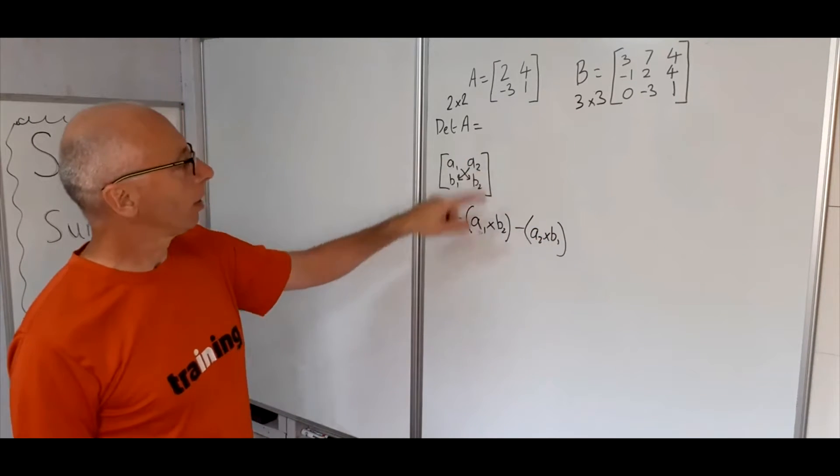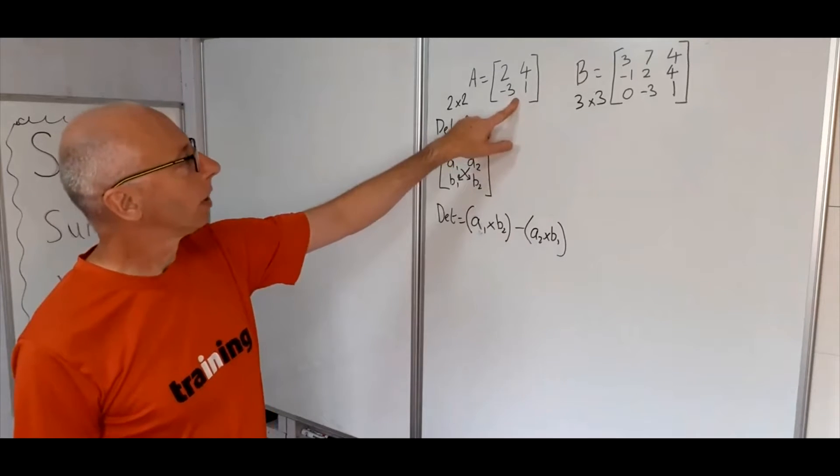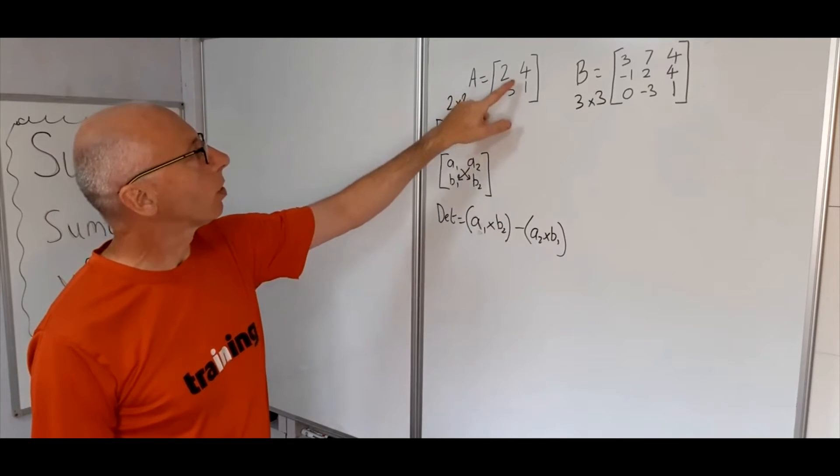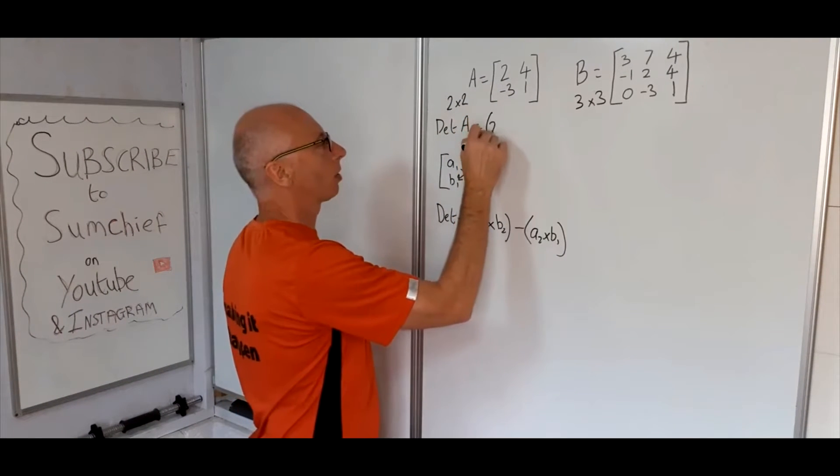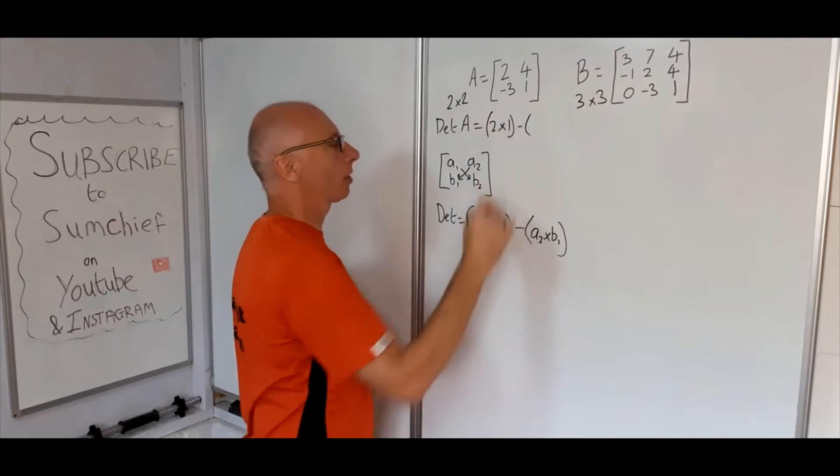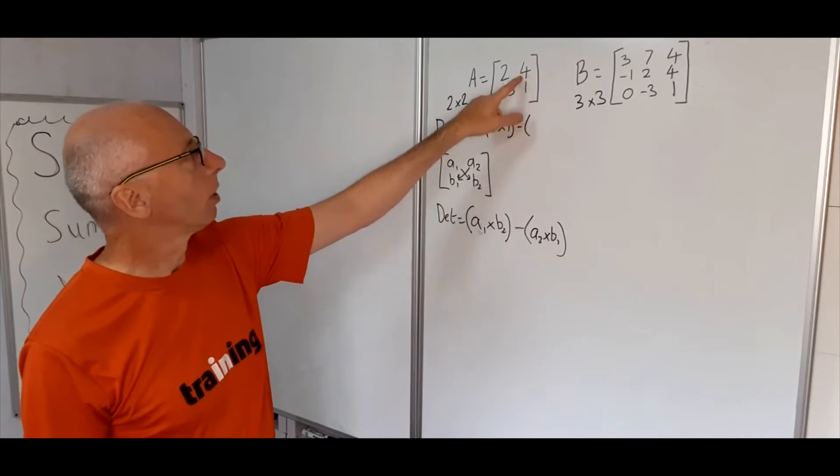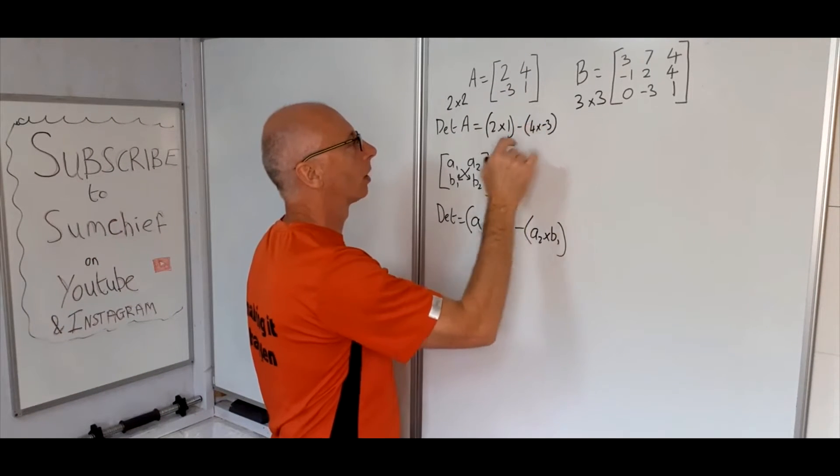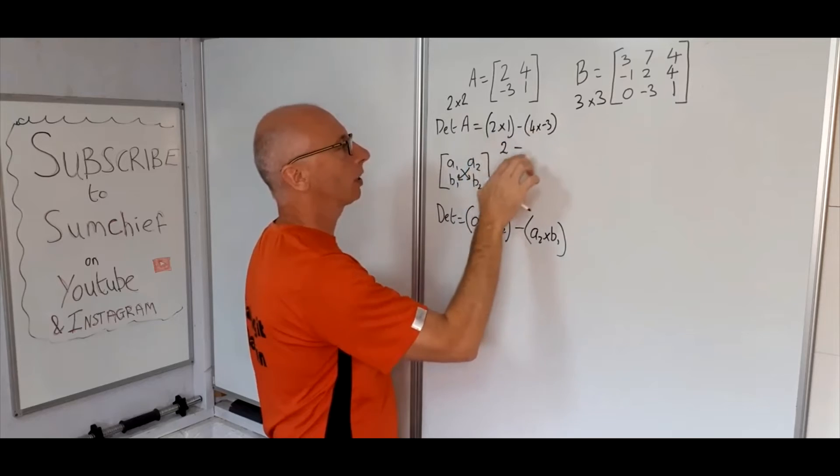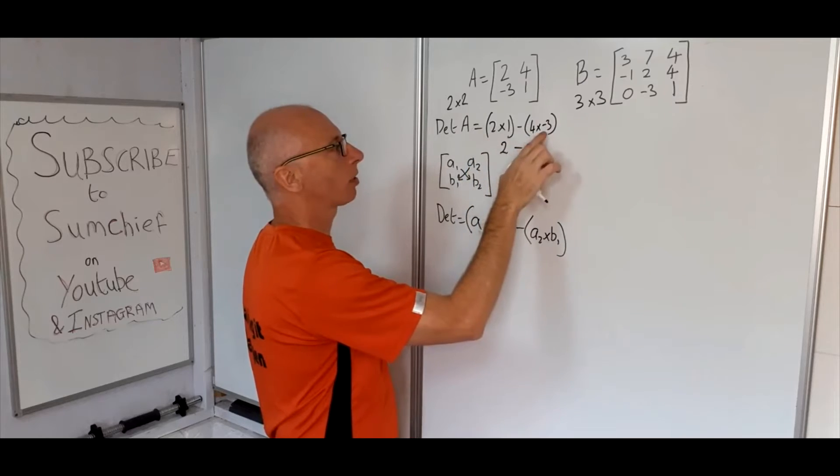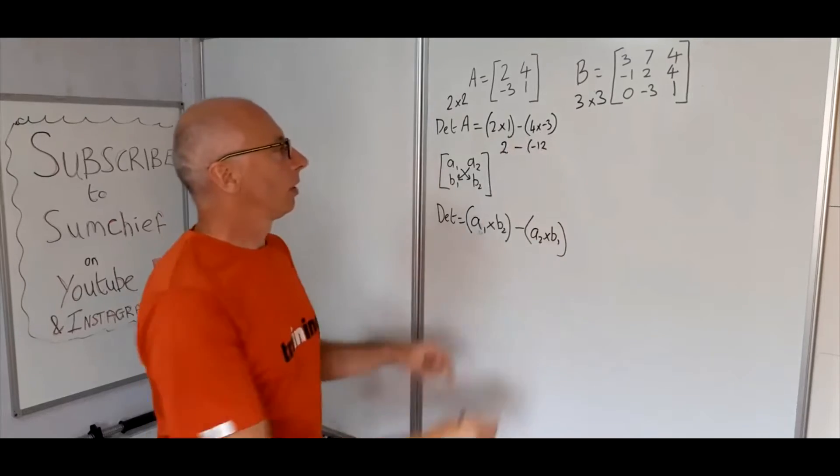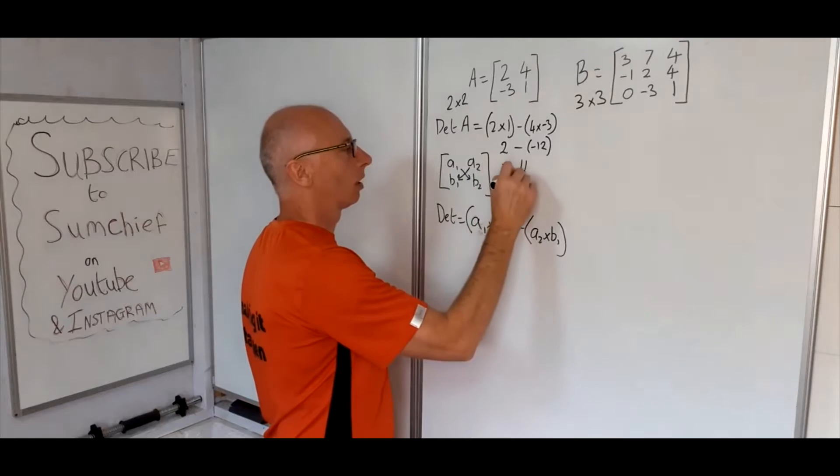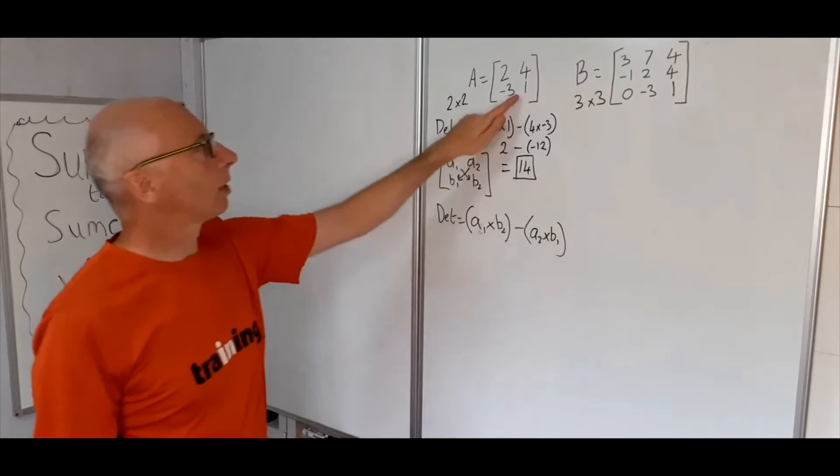Now what we're going to do now is plug those formulas into this one to find the determinant of this matrix. So A1 times B2, that's 2 times 1. So it's 2 times 1 minus A2 times B1, 4 times minus 3, 4 times minus 3 is minus 12. 2 minus minus 12 is 14. And there we have it. That's the determinant of this one.